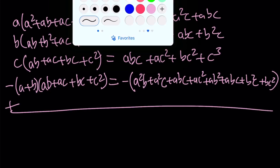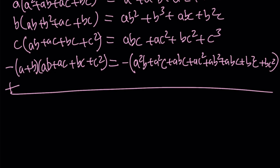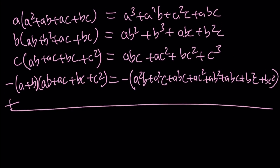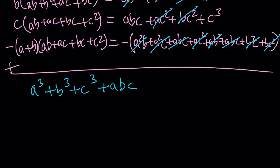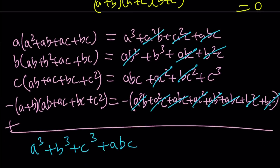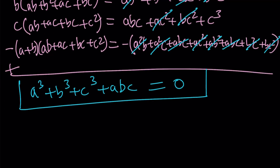Now we're going to add these all together and see what we can simplify. Notice that everything in the last row has a minus sign in front of it because we're negating everything. So a²b cancels out, a²c cancels out, abc cancels out, ac² cancels out, ab² cancels out, another abc cancels, b²c cancels, and bc² cancels. Pretty much everything inside the parentheses on the last row canceled out, and we are left with a³ + b³ + c³ + abc. This is equal to zero because we set our original expression equal to zero — that's important, and we're going to use it later.